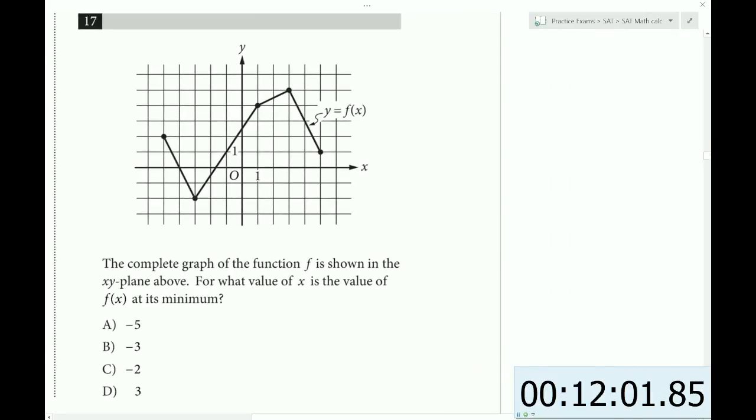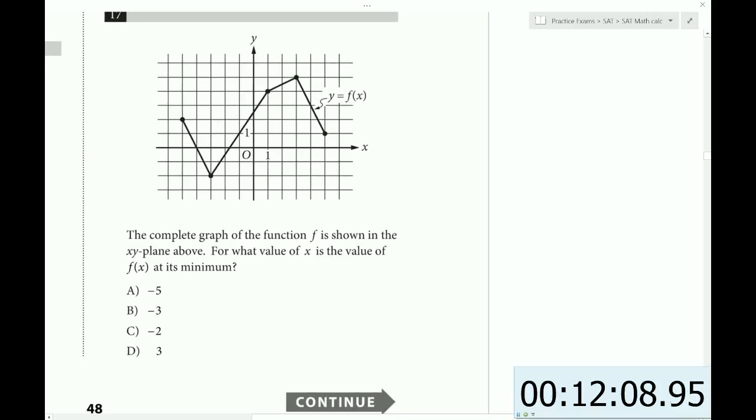The complete graph of the function f is shown in the xy-plane above. For what value of x is the value of f(x) at its minimum? We're looking for a minimum of the function. So that looks like it's going to be here. So this is the corresponding x-value, which is negative 1, 2, 3. That's answer choice B.